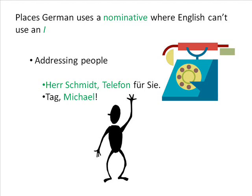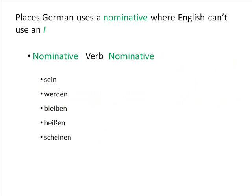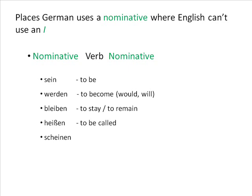For instance, the nominative is used when addressing people, as in 'Herr Schmidt' of 'Herr Schmidt, Telefon für Sie,' or 'Tag, Michael.' Also, there's a set of verbs that you use the nominative on both sides of — i.e. nominative, verb, nominative. Those verbs are sein, werden, bleiben, heißen, and scheinen — that's to be, to become (and also would and will), to stay or remain, to be called, and to seem or appear.